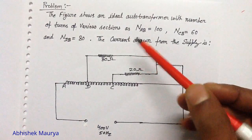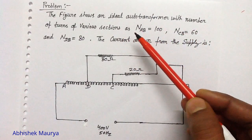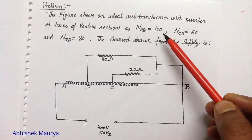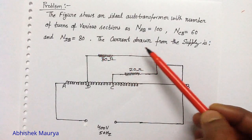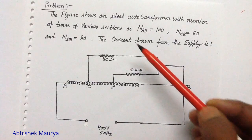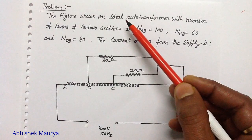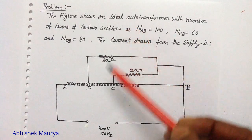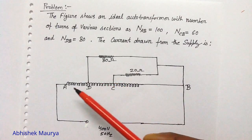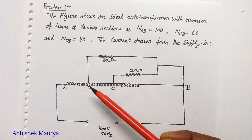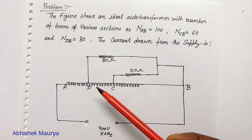In this question, there is an ideal auto transformer with number of turns: NAB equals 100 turns, NCB equals 60 turns, and NDB equals 80 turns. We have to calculate the current drawn from the supply. Since the auto transformer is ideal, there will be no losses. We neglect the resistance, reactance, and exciting current of this auto transformer.